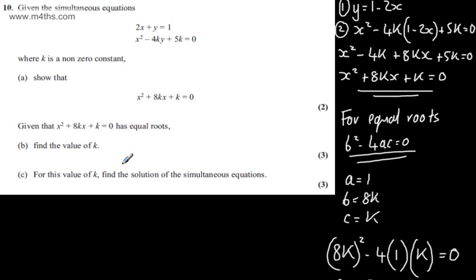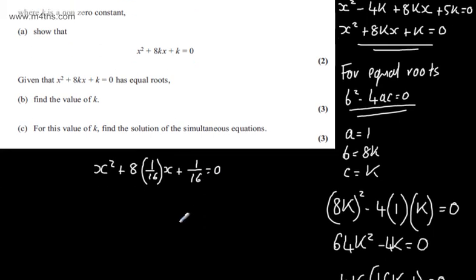So if we consider now when k is equal to 1 over 16 we will have x squared plus 8 multiplied by k which is going to be 1 over 16 multiplied by x plus 1 over 16 and that's equal to 0. If I multiply through the equation by 16 I'll have 16x squared, I'll have plus 8x plus 1 is equal to 0.